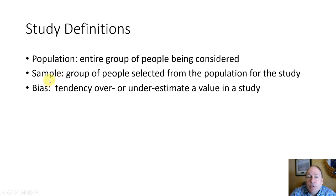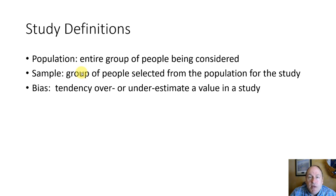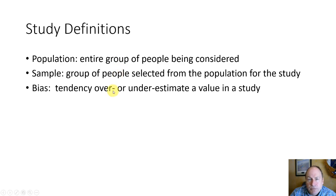The sample is the group of people that we select from the population for the study. For example, if we were doing a poll of voters and we chose 1,000 voters in a certain way from the United States, that would be the sample — where the population was the entire group of registered voters, the sample is just the 1,000 voters we're using for the poll.